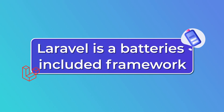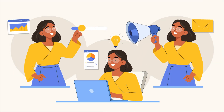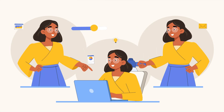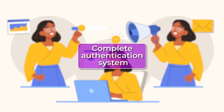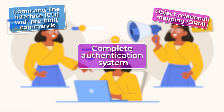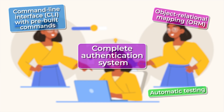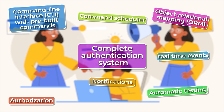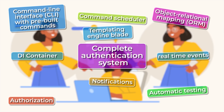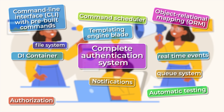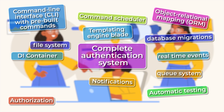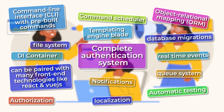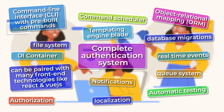Number three: Laravel is a batteries-included framework, meaning it comes with many features built in and ready to use out of the box. These include a complete authentication system, ORM, command line interface with pre-built commands, automatic testing, authorization, command scheduler, notifications, real-time events, DI container, a templating engine called Blade, queuing system, file system, database migrations, multiple adapters, localization, and support for front-end technologies like React and Vue.js.